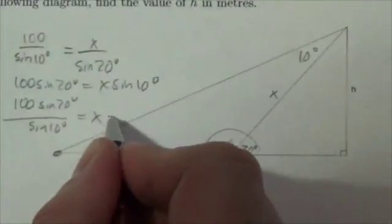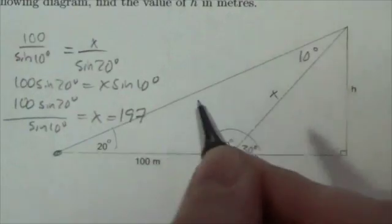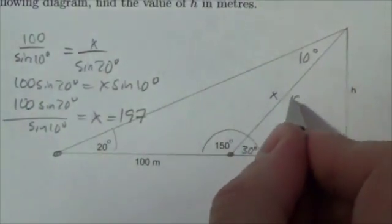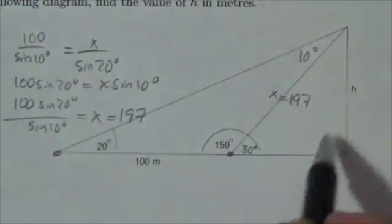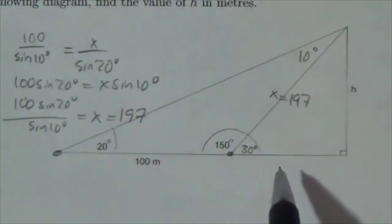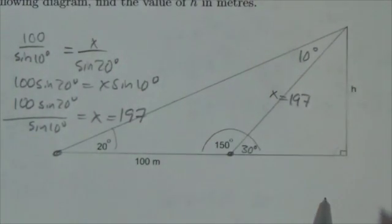So we're going to say here that x is equal to 197. So 197 right here. Now that's enough for me to move into this triangle and be able to solve for h with a fair bit of confidence.